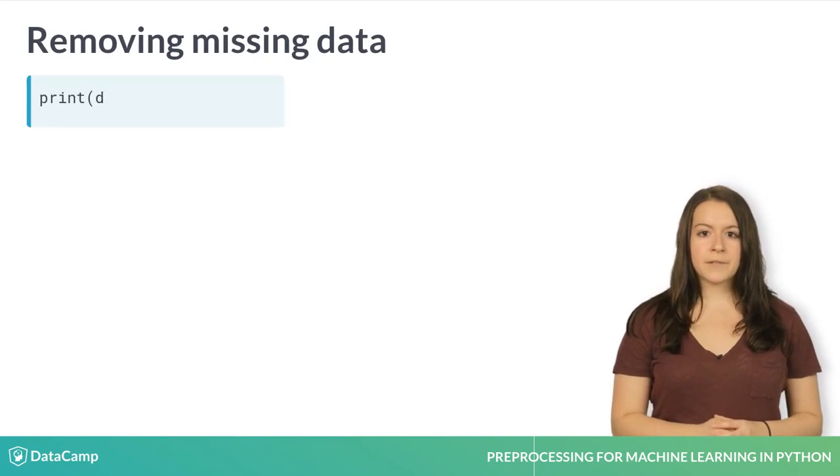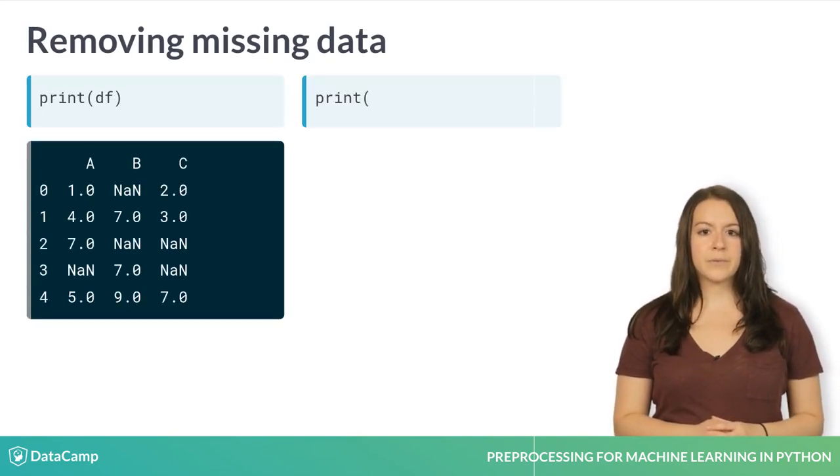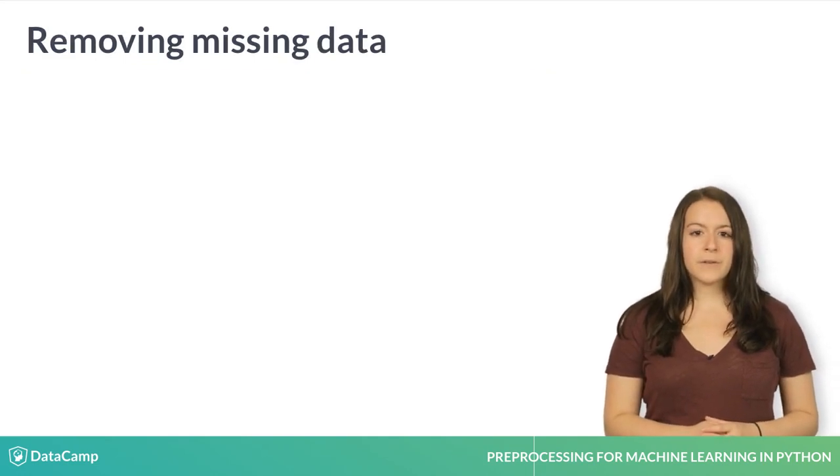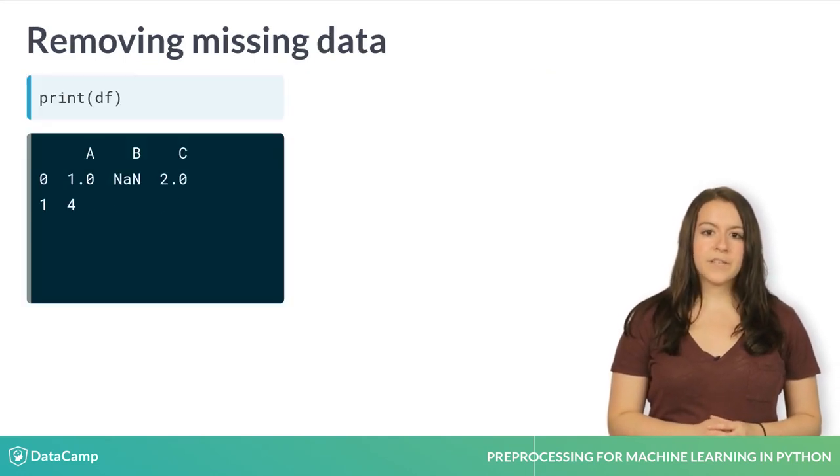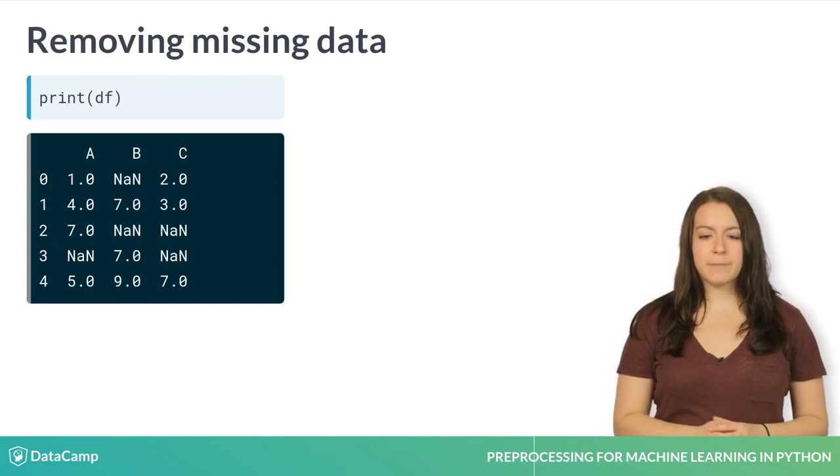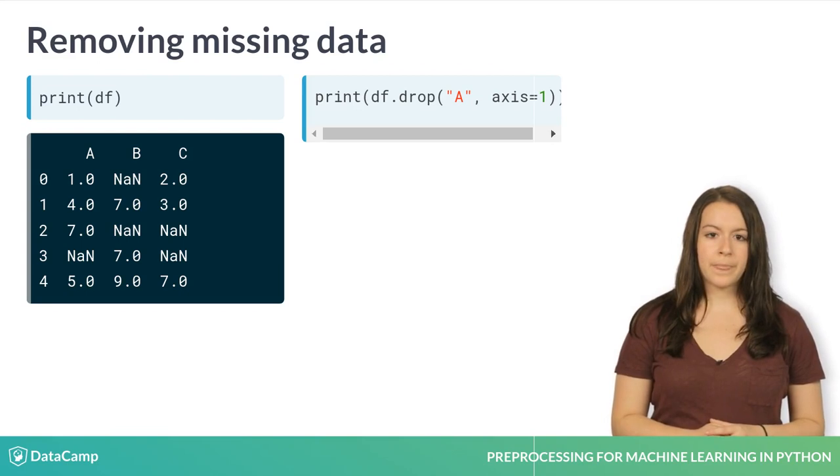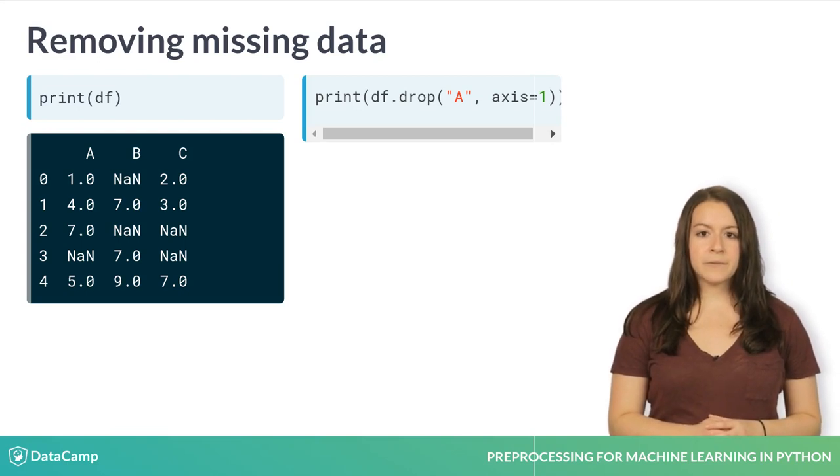You can drop specific rows by passing index labels to the drop function, which defaults to dropping rows. Usually, you want to focus on dropping a particular column, especially if all or most of its values are missing. You can use the drop method as well, though the parameters are different. The first parameter is the column name, in this case A. We have to specify axis equals 1 in order to designate that we want to drop a column.